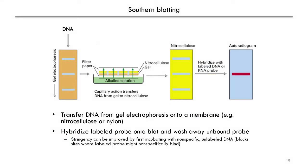You can then wash away the probe that has not hybridized to any of the blotted DNA. You can also improve stringency and specificity by first incubating with non-specific unlabeled DNA that blocks any sites where the labeled probe might non-specifically bind. After doing this, you can detect if and where the probe has hybridized to the target DNA, and tell if DNA with a specific sequence is present and identify which band it corresponds to on the blot.